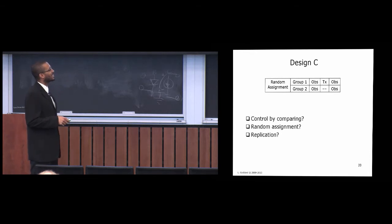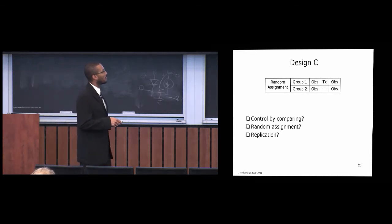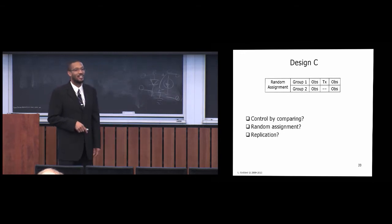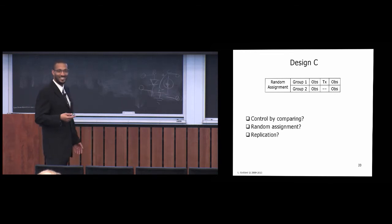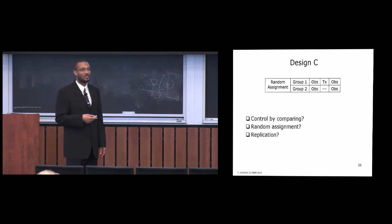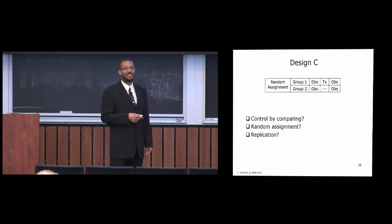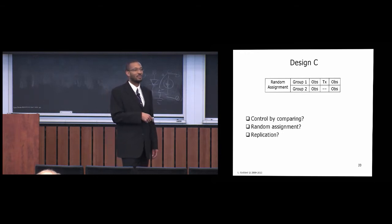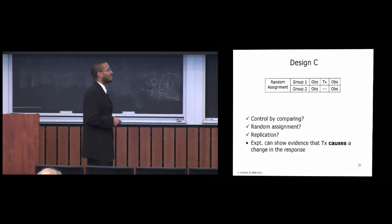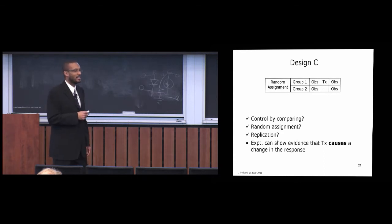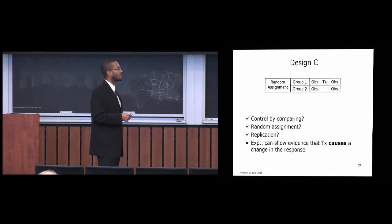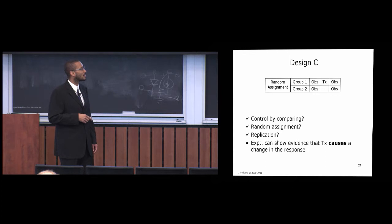What about Design C? We randomly assign people to group one and group two, make an observation before, give group one the treatment and group two nothing, then observe again. This satisfies all three principles: control by comparison, random assignment, and replication — so it's a good experimental design. The key difference from Design A is that we have a before-and-after observation, allowing us to see whether there's a change in response, giving evidence that the treatment causes a change.